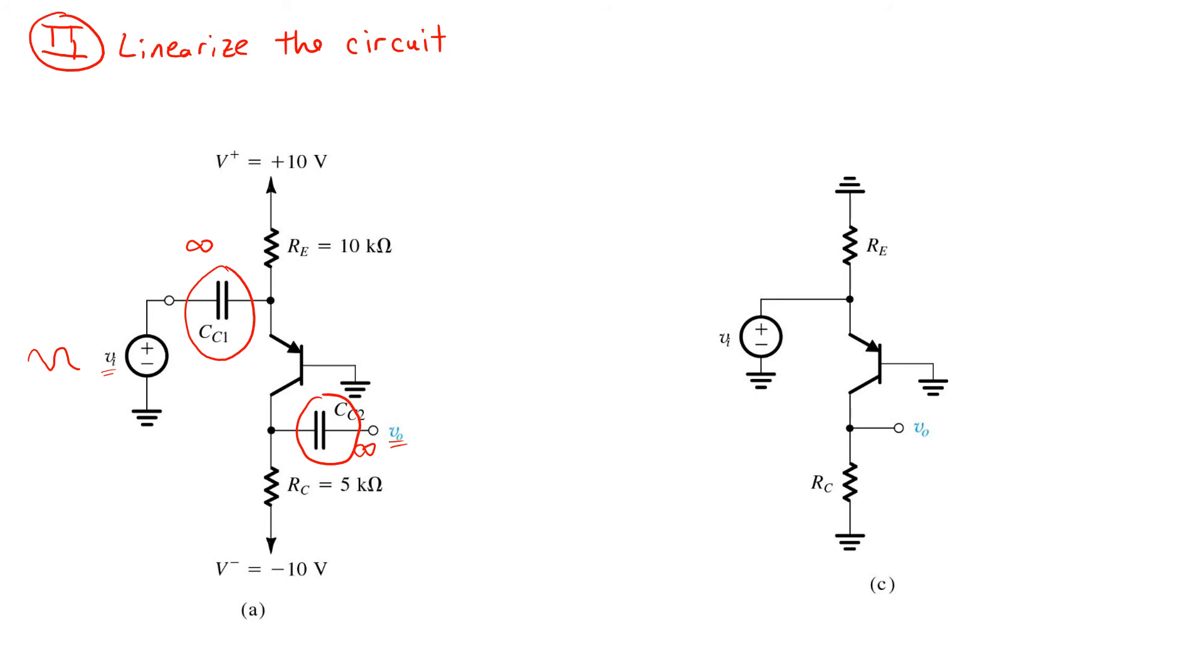So, we sometimes will just write a shorthand notation where we say that these capacitors have infinite value. That is, we're just assuming that we're going to have to choose them large enough so that this assumption is valid. So, in our small signal analysis, we replace CC1 and CC2 with short circuits. So, that's the implicit assumption there. We also have set the supply voltages to 0 volts. Again, in the AC analysis, we set all other independent voltage sources to 0 that have already been considered in the DC analysis, and we're left with the simplified schematic here on the right.